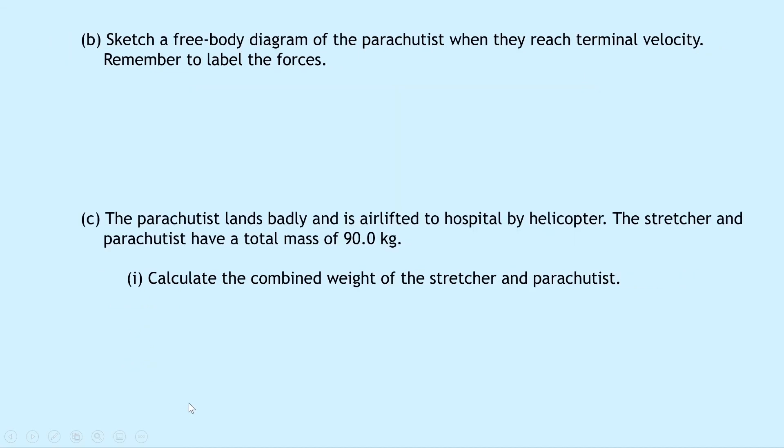Part B says to sketch a free body diagram of the parachutist when they reach terminal velocity. Remember to label the forces. We're going to assume this is the first terminal velocity. So here's our parachutist, our skydiver, and we can label our forces. Our force up the way is going to be air resistance or drag, and the force balancing that down the way is going to be the weight due to the skydiver.